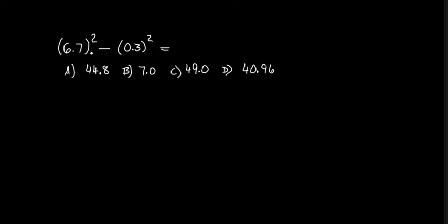6.7 squared minus 0.3 squared is equal to which one of these. Notice it says equal to, so it's an approximation, not the exact value. Now 6.7 is close to 7 but not 7 yet, so we're gonna take this as 7.